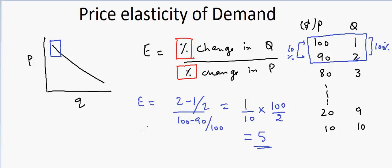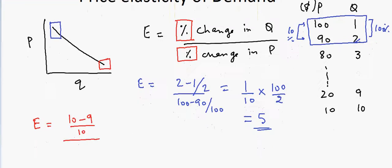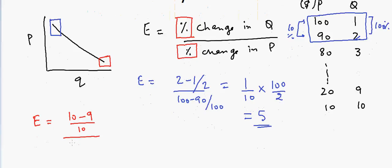But now if we look at the lower price range, then in this case elasticity will be equal to 10 minus 9 divided by 10, and then we have 20 minus 10 divided by 20, and sorry this will be 9 here. So in that case it will be equal to 1 by 9 divided by 1 by 2, or that will be equal to 1 by 4.5.